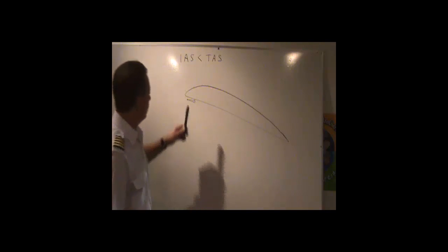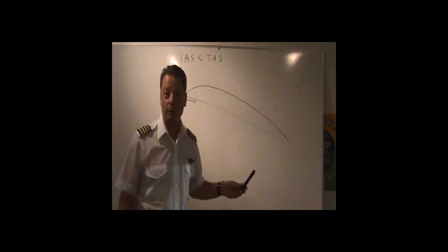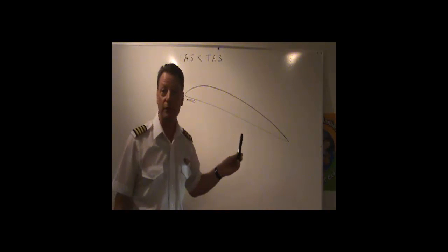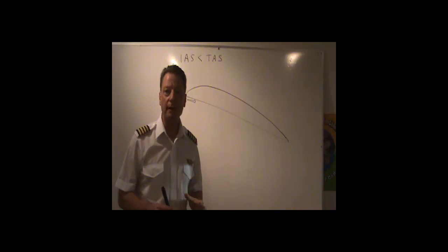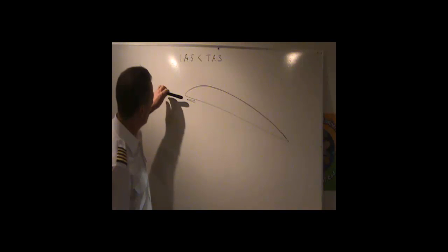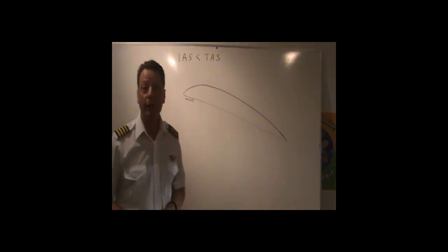Now, you know we have the pitot tube on the airplane. For those of you who have done pre-flights, you always check to make sure that this is clear. Well, our airspeed indicator in the aircraft is operated. It measures the impact of the air going into that tube.